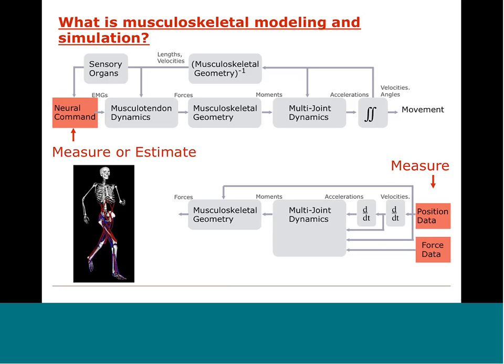Modeling and simulation could also mean doing an inverse dynamics analysis. This typically means we start from a measured position and possibly force data and differentiate to determine the dynamics of the system. With a model of musculoskeletal geometry, we can also estimate muscle forces. It can be any part or variation — for example, an inverse kinematics or inverse dynamics analysis both use a model.